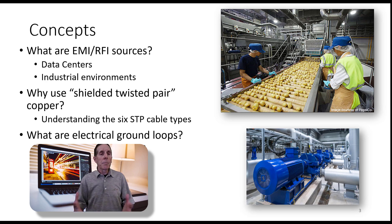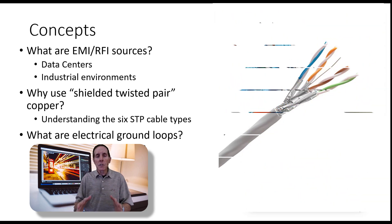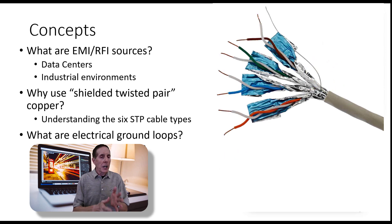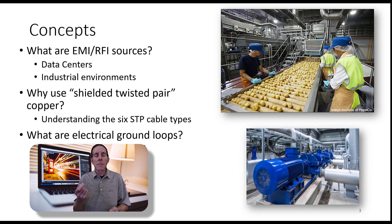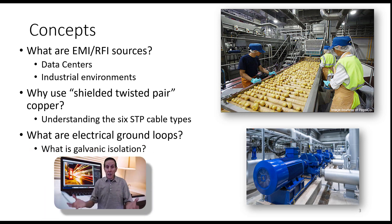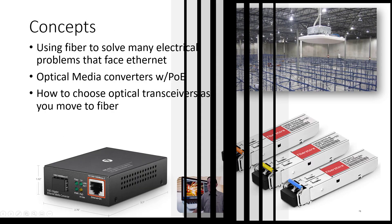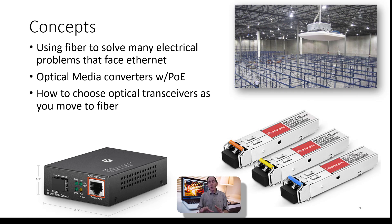Most of us in a business environment do not use shielded twisted pair, but it's a great solution for many of these problems. We're going to understand shielded twisted pair and look at the six types of STP cable. Because we're running these electrical systems known as our Ethernet network, they are subject to things like electrical ground loops. We're going to learn the importance of galvanic isolation. We're also going to look at how we can use fiber to solve many of these electrical problems that face Ethernet.